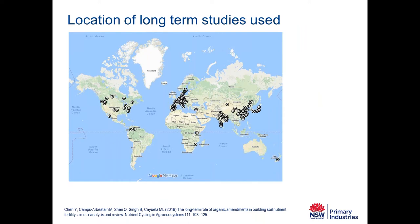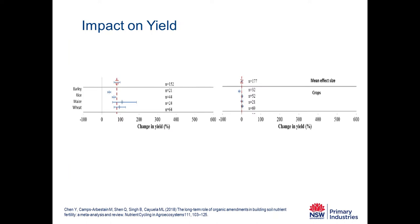They produced a map of where these long-term studies were located. I was disappointed that there were no long-term studies in Australia on organic amendments that met the quality criteria. There are a lot of studies in Japan, China, across Europe, and in the Americas — so a good geographic range was used in this meta-analysis.